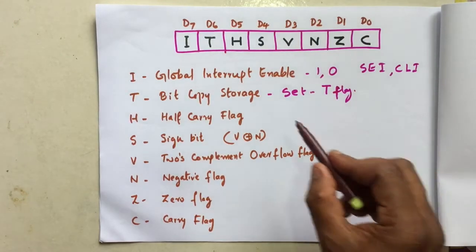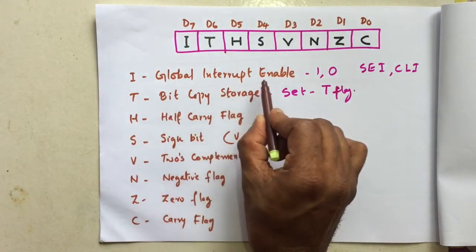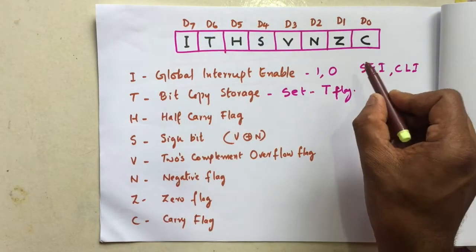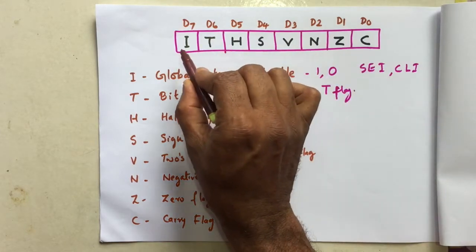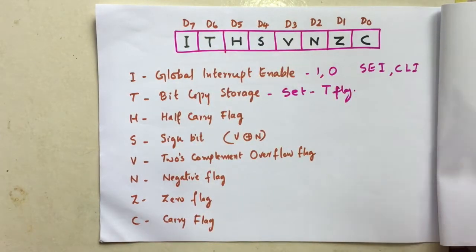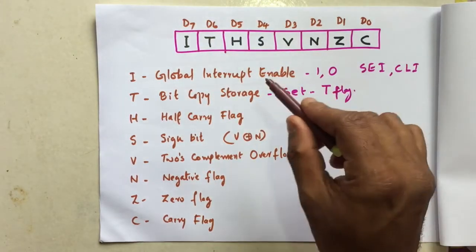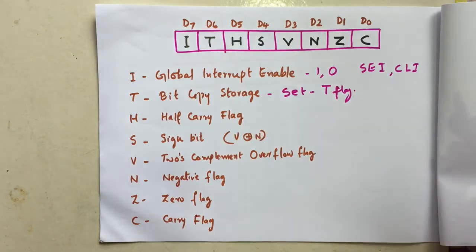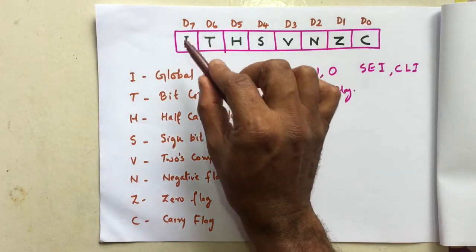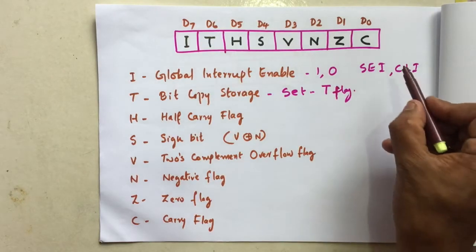Let me explain each one. I means global interrupt enabled. If this is 1, then only all the interrupts will work. Otherwise, if it is 0, the interrupts will not work. That is, if I is 1, the interrupts will work.